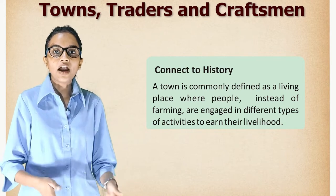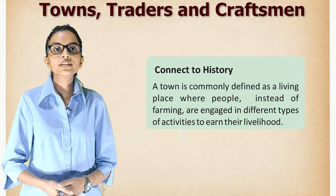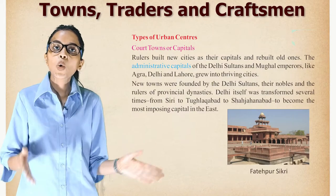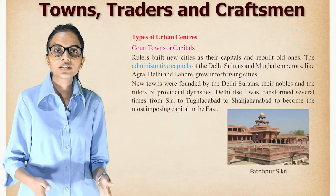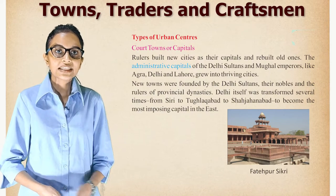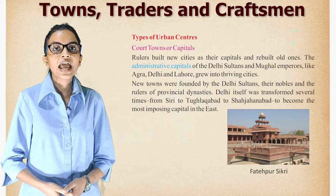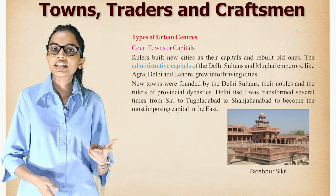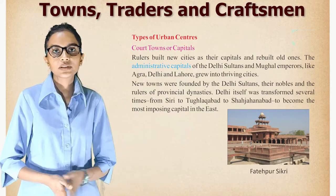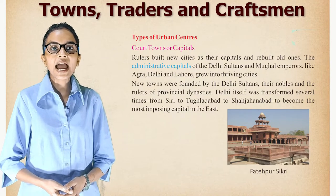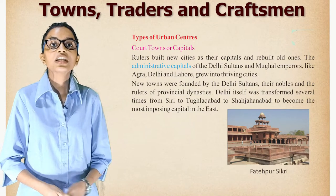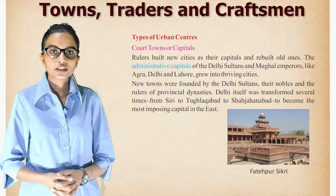Types of urban centers — Court Towns or Capitals: Rulers built new cities as their capitals and rebuilt old ones. The administrative capitals of the Delhi Sultans and Mughal Emperors, like Agra, Delhi, and Lahore, grew into thriving cities. New towns were founded by the Delhi Sultans, their nobles, and the rulers of provincial dynasties. Delhi itself was transformed several times — from Siri to Tughlaqabad to Shahjahanabad — to become the most imposing capital in the east.